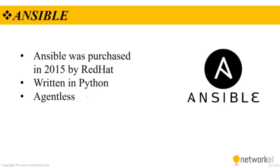Ansible will confirm if changes actually need to be made by verifying if the configuration is already in place. If so, it will skip that task. This is referred to as idempotency — only making changes when they are actually required. If the playbook determines a change does not need to be made, it will skip that task.